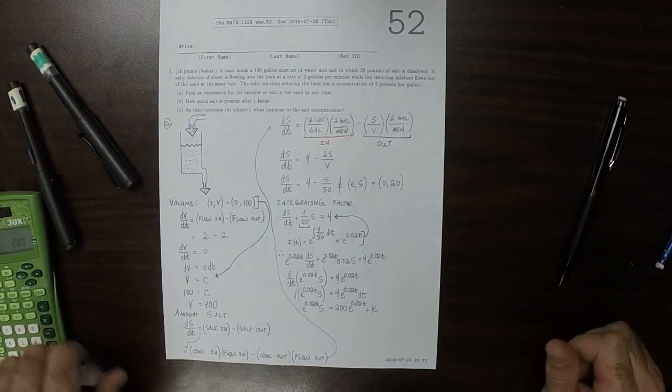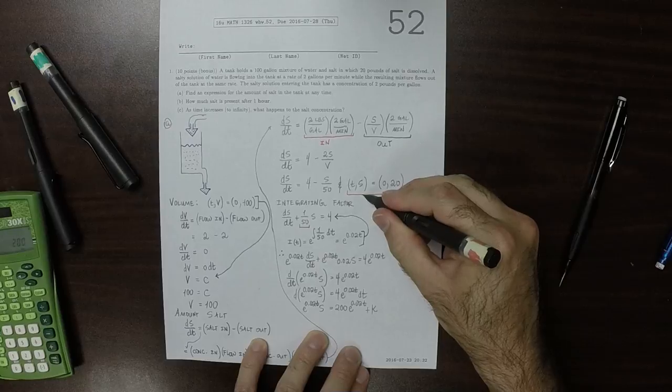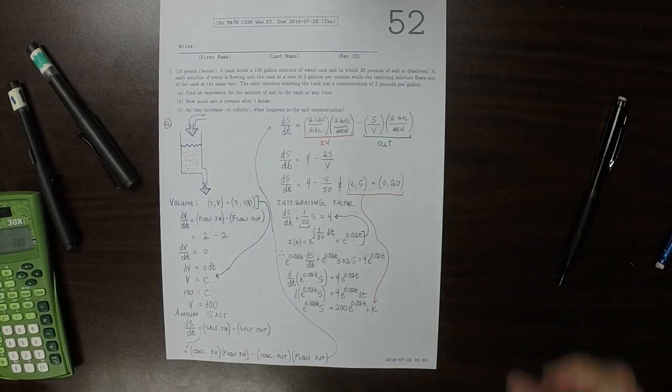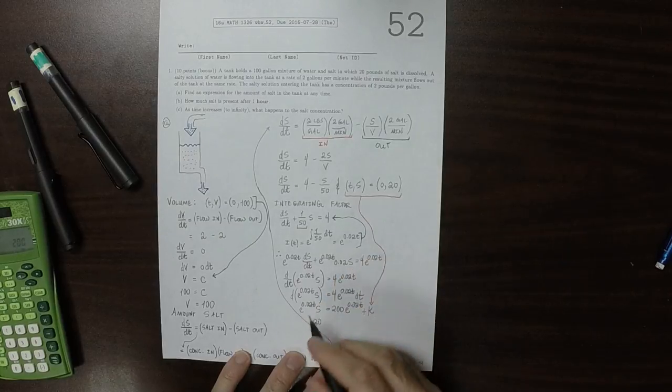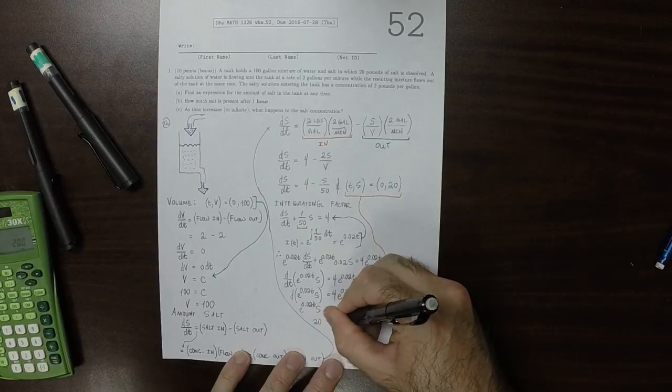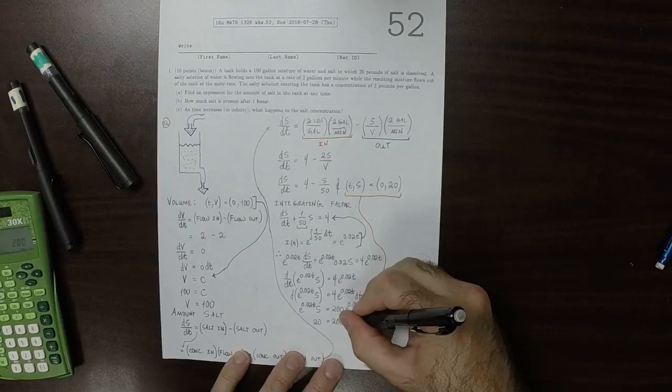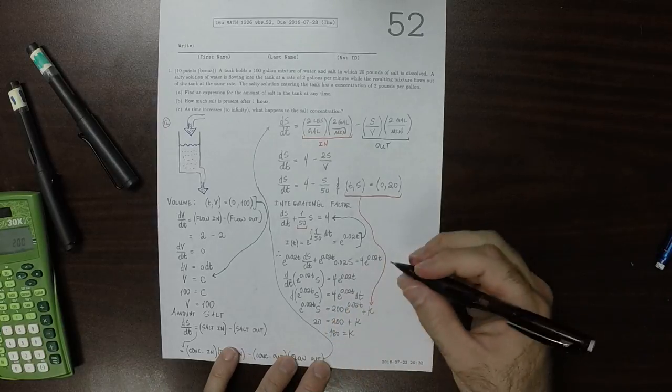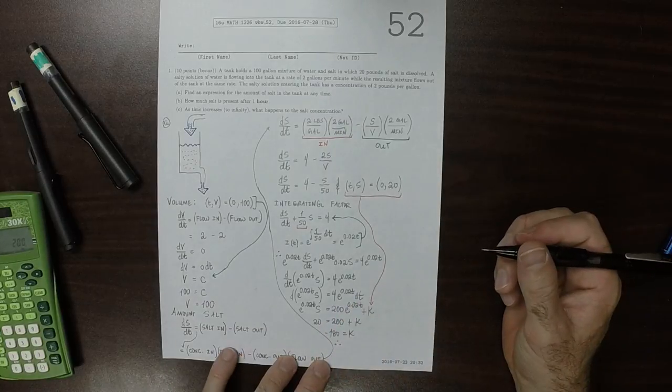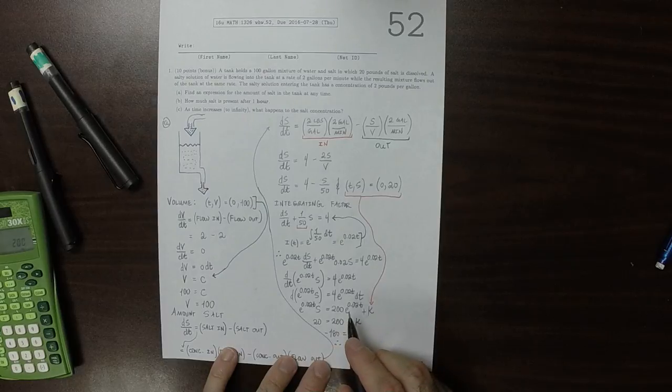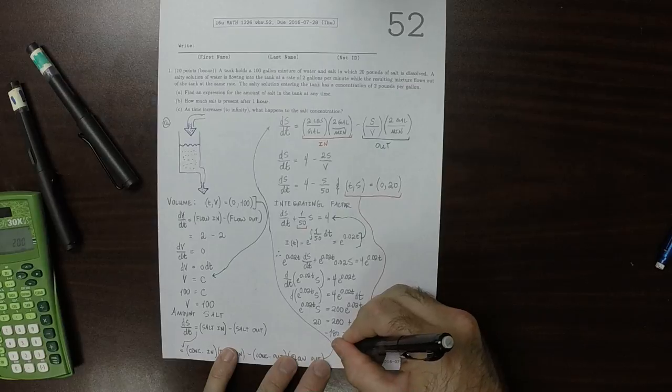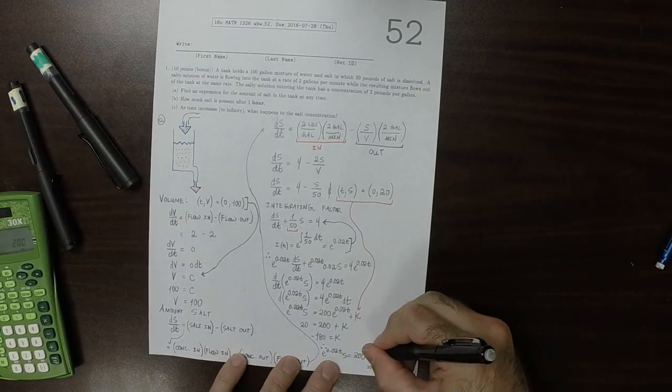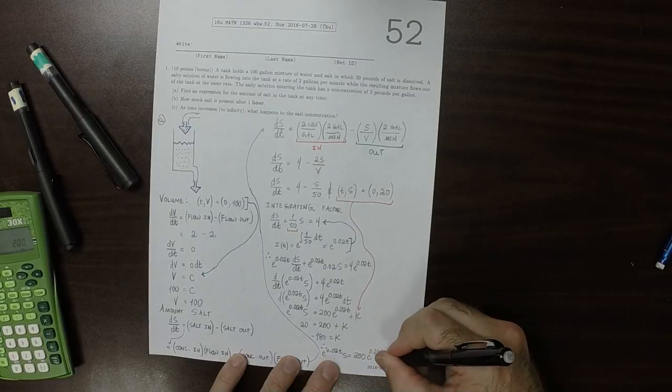We can use the initial data to figure out k. So we know if we plug in t is 0 and S is 20, that should be a solution. So the left-hand side would be 20, because exponential of 0 is 1, is equal to 200. And then this would be times 1 plus k. So that tells us that negative 180 is k. And therefore, our current position is that exponential 0.02t times S is 200 exponential 0.02t minus 180.